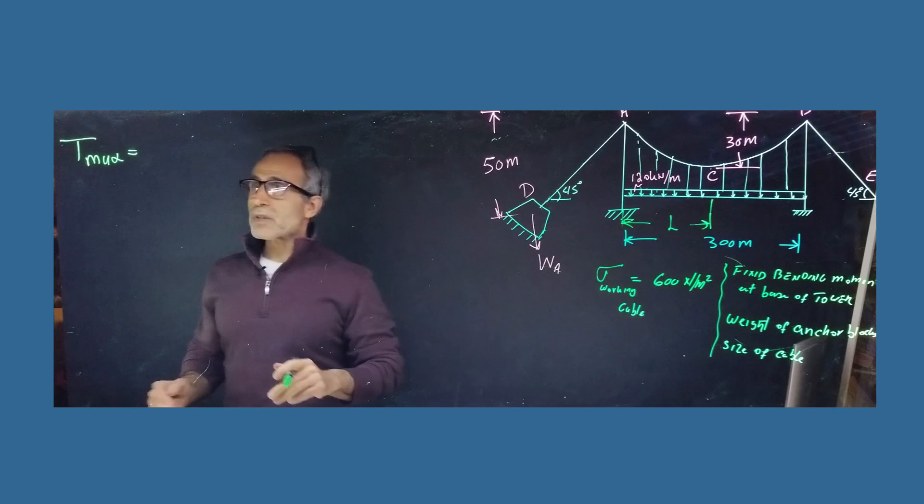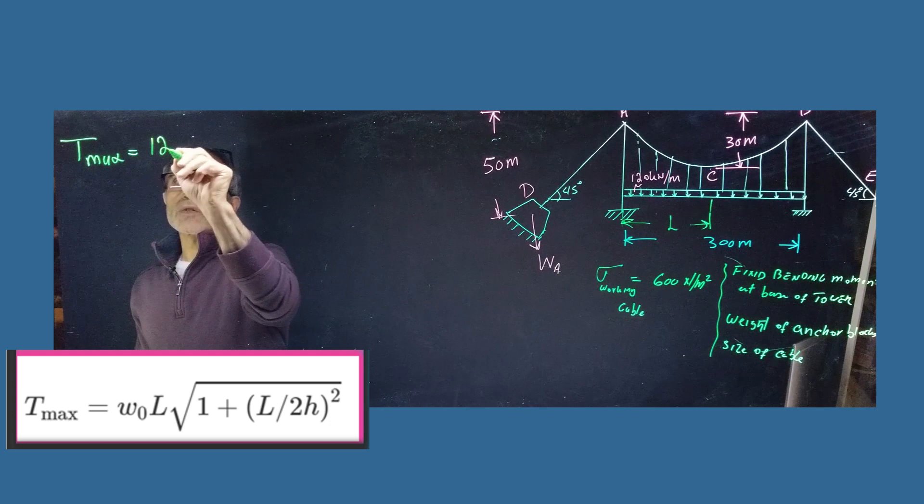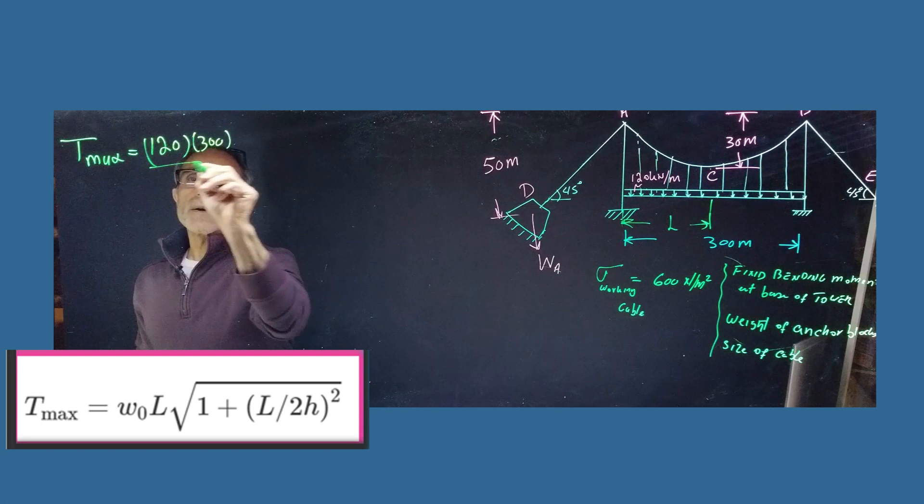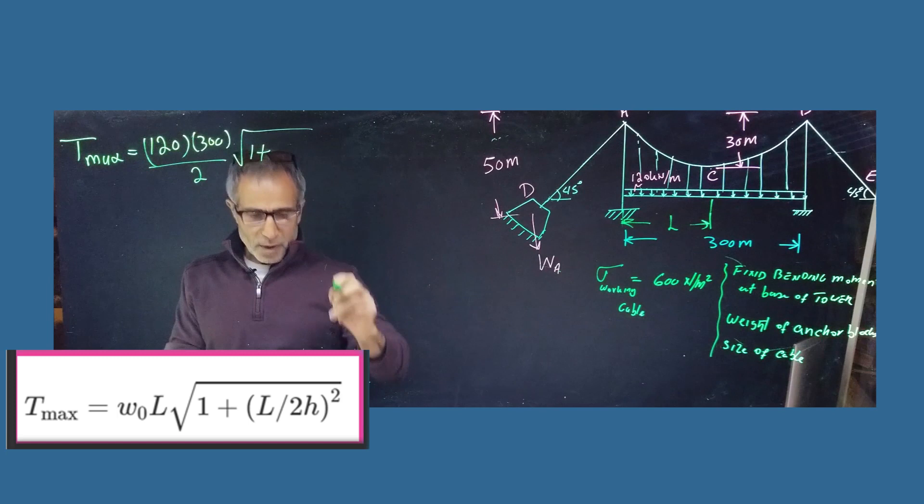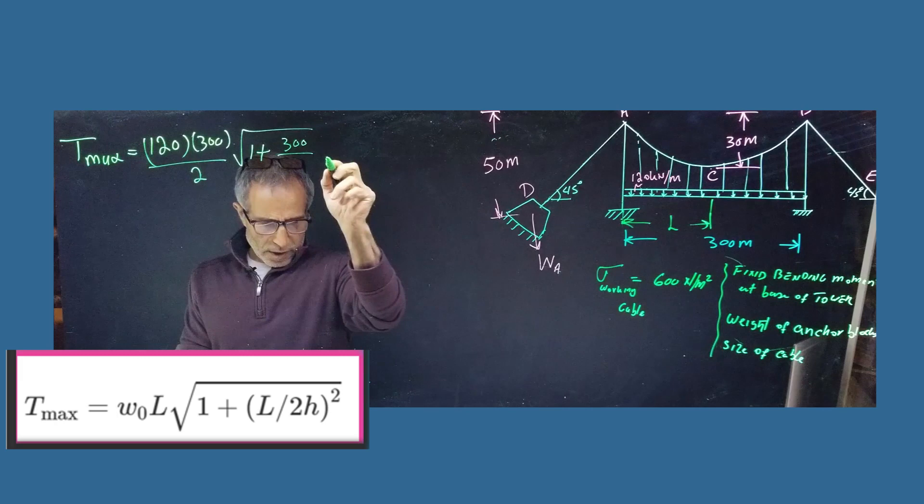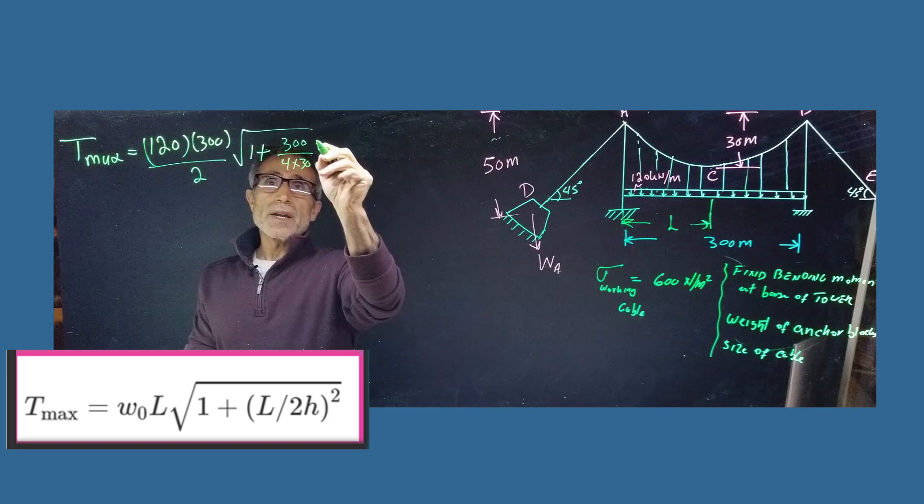And looking at the equation again, is the W0 times L, and that's going to be 100, W0 is 120, and L is 300 divided by 2, and divide that by,